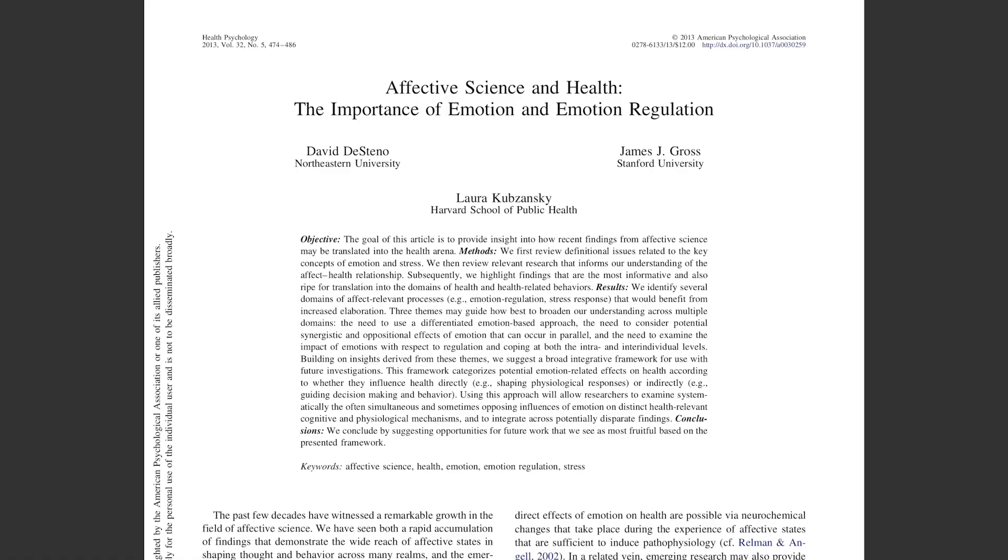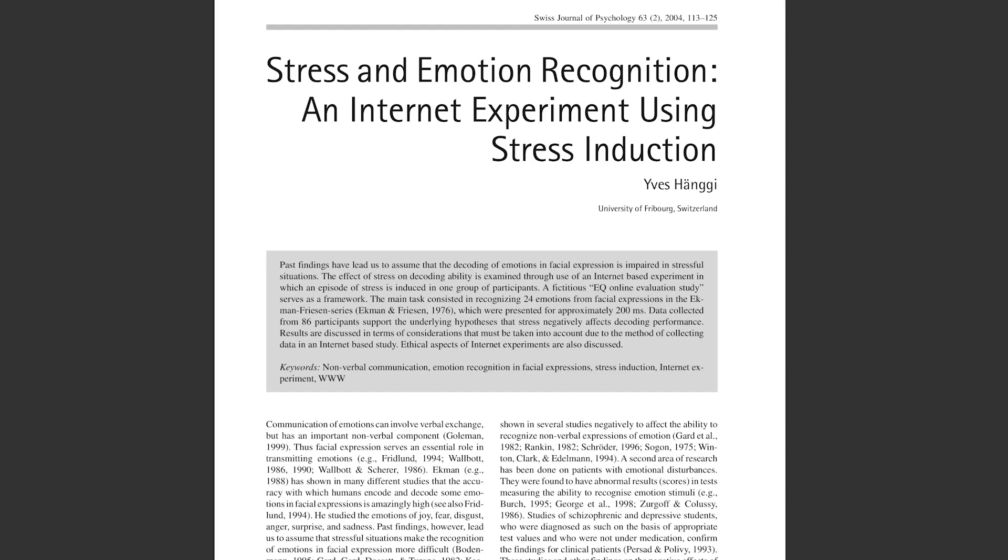In academic writing you're expected to write in a certain writing style, whether it be MLA, APA, Chicago, AMA, or any others. In psychology we use APA style, and your sources may come from scholarly research articles that look similar to this, or this, or maybe something like this.